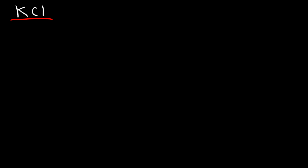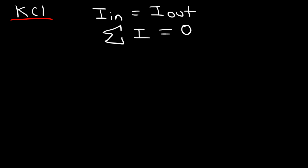In this video, we're going to talk about Kirchhoff's Current Law, abbreviated KCL. The basic idea behind KCL is that the total current that flows into a junction must equal the total current that flows out of the junction. If we assign currents flowing into a junction as positive and currents leaving as negative, then the sum of all individual currents must add up to zero. So if 10 amps go in and 10 amps come out, positive 10 plus negative 10 equals zero.